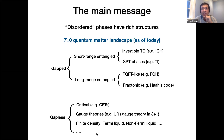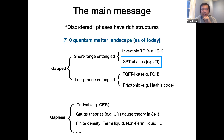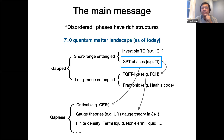I don't want to explain each item on this map here. For the first part of the talk, I will focus on a particular subclass called SPT phases — symmetry-protected topological phases — which I'll define very shortly on the next slide. In the second part, I will discuss the connections between SPT phases and the other items on this map, which relate to something called quantum anomaly.